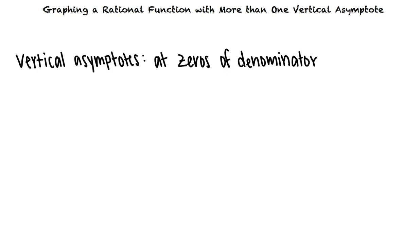This video will cover the topic of graphing a rational function with more than one vertical asymptote. How can a rational function have more than one vertical asymptote? A rational function in its simplest form has vertical asymptotes at the zeros of the denominator. This means that if there is an expression like a quadratic in the denominator, we will have more than one vertical asymptote. Let's take a look at an example problem to see how this works.